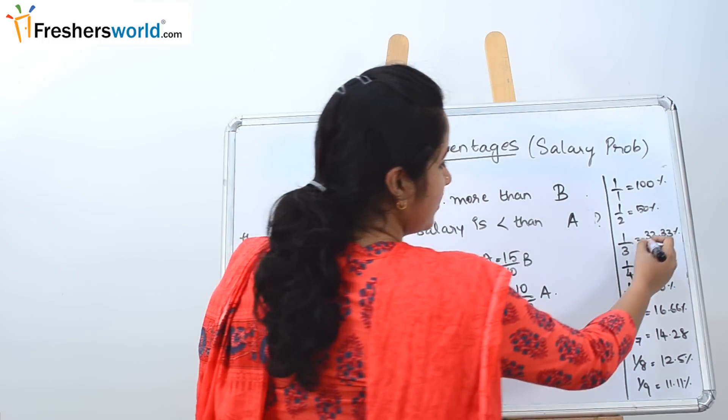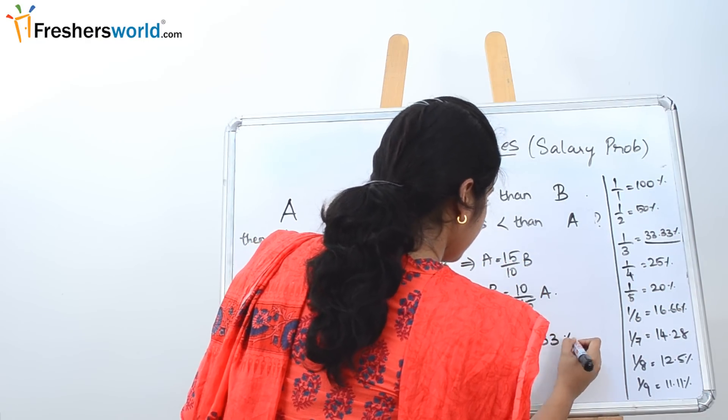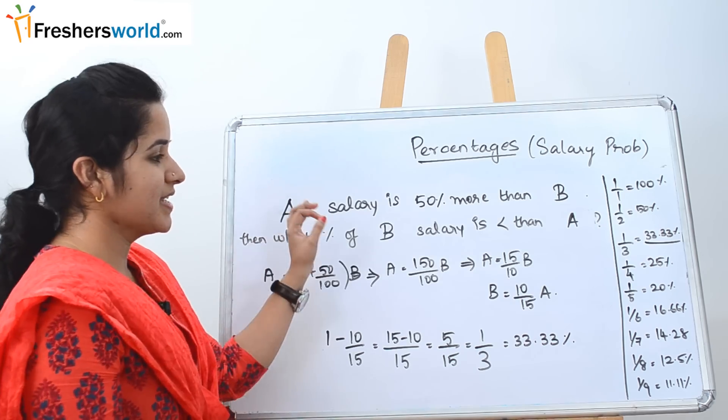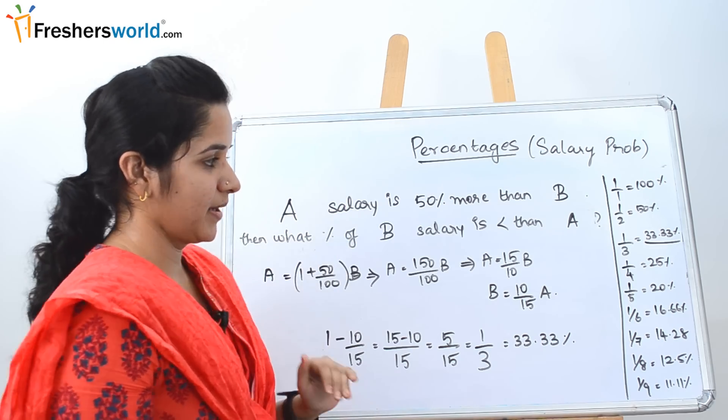So 1 by 3 is what? 33.33%. So as we know that B's salary is 33.33% less than A.